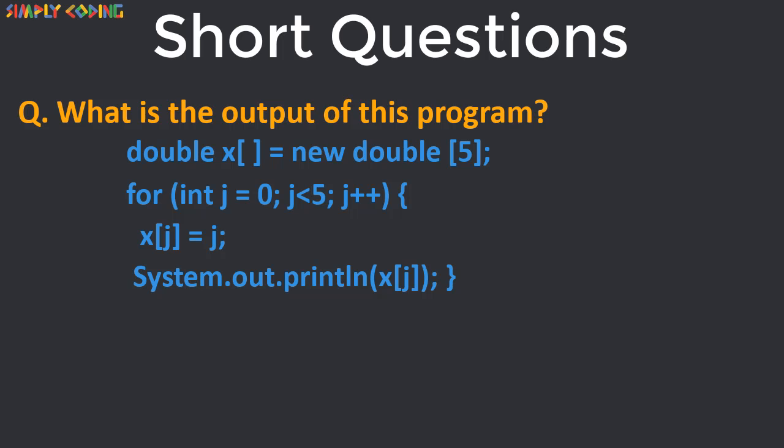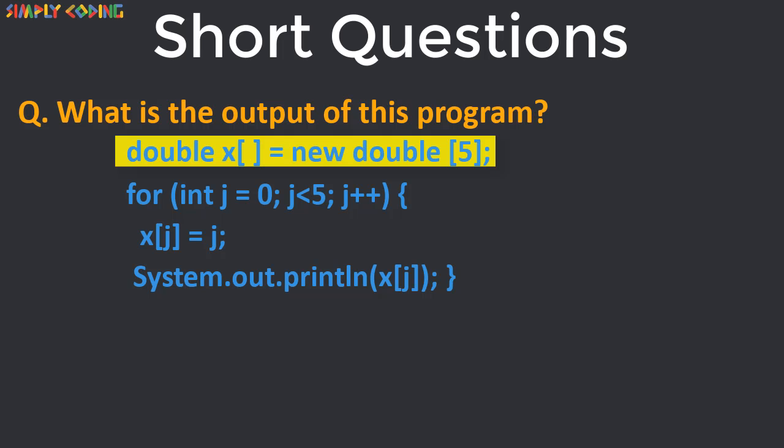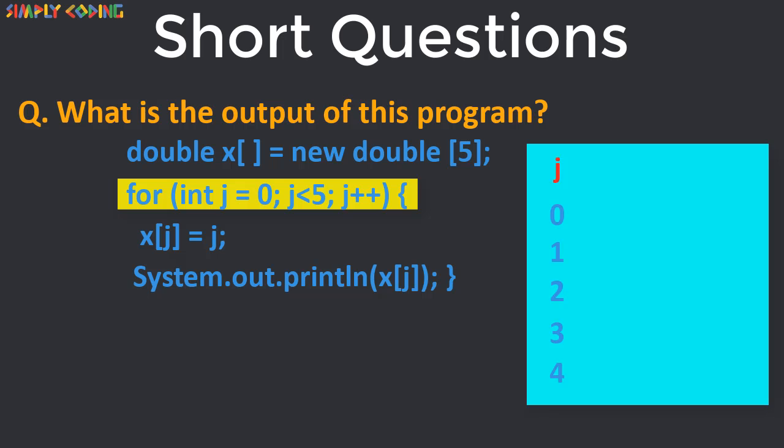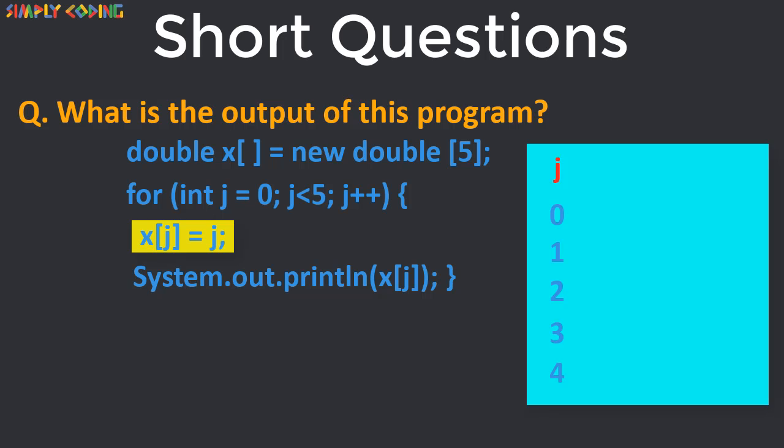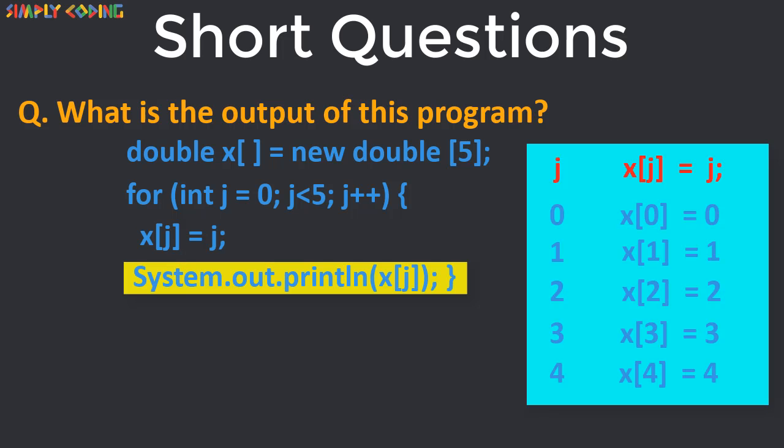Let's see another program where you have to give the output. Here let's see what the program is doing. There is a double array of size 5 then a loop is set up for 5 iterations. In the loop each element of the array is initialized the value of index j which is from 0 to 4. Then the array is printed.